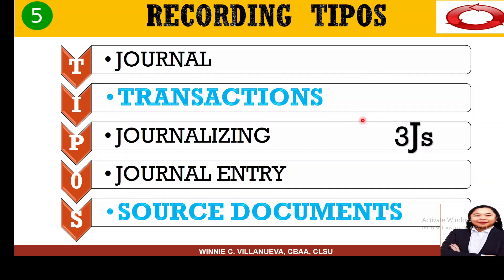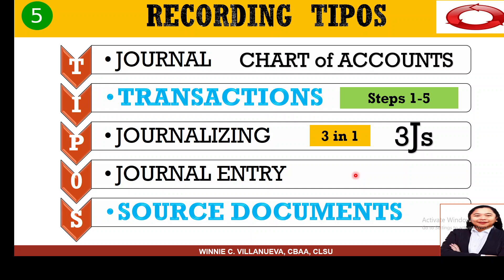What we just did: we journalized using the general journal and created journal entries. The type of journal entries used in the samples are simple — one debit and one credit account each. This is the synergy effect — two heads better than one. We cannot journalize without first doing transaction analysis steps 1 to 5 using the chart of accounts.